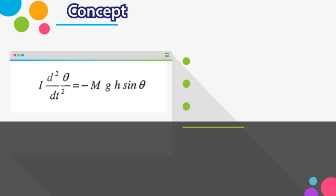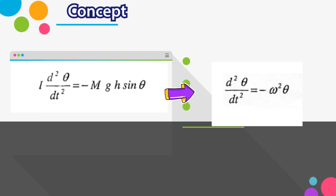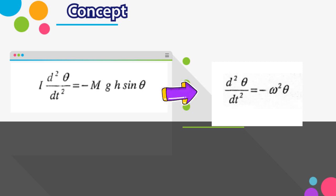You need to start with the equation of motion. I times d squared theta over dt squared represents the inertia times the angular acceleration. On the right-hand side, it is the force, which is mass times gravity — the weight. By solving this equation, you end up with d squared theta over dt squared equals minus omega squared times theta — the oscillatory system. In this case, you need to define why sine theta can be approximated as theta.